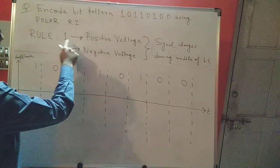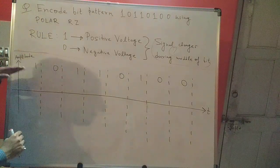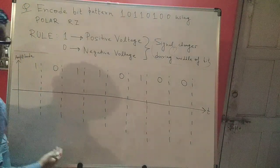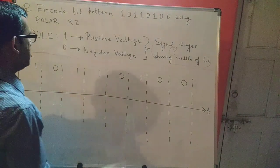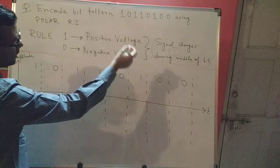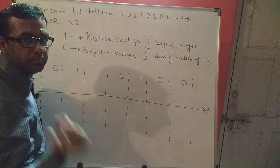Now see what does 1 represent? 1 represents a positive voltage. Positive voltage essentially means that you will be above the time axis and 0 represents negative voltage which again means that you will be below the time axis. But the thing that you must keep in mind is whether you are dealing with a positive voltage or a negative voltage your signal must change during the middle of the bit.